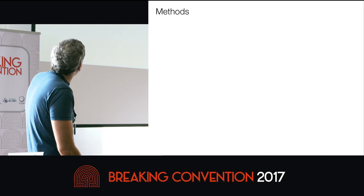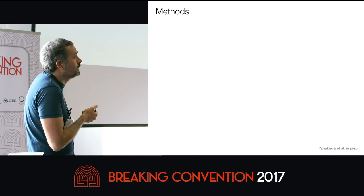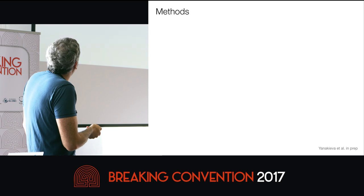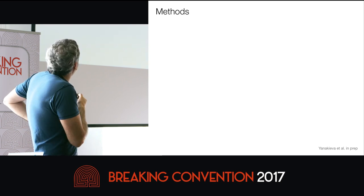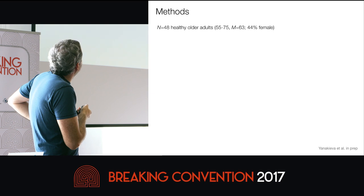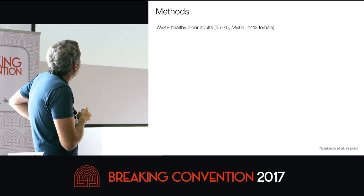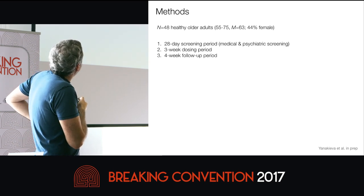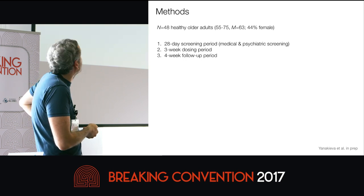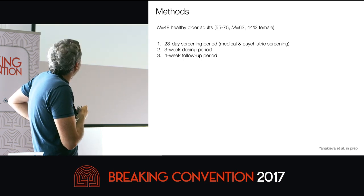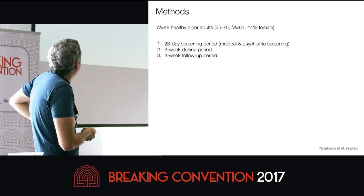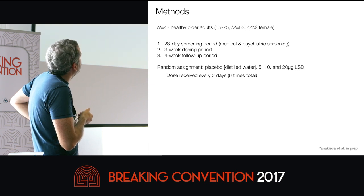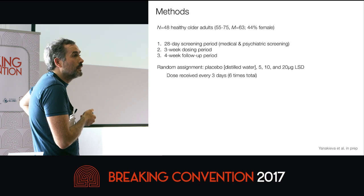There is very robust evidence that dopamine agonists produce temporal overestimation. This study was run by Eleusis Pharmaceuticals, who allowed us to piggyback on it and study time perception. There were 48 healthy older adults ranging from 55 to 75 years of age, approximately half female. The design included a 28-day screening period, a three-week dosing period, and a four-week follow-up. Participants were randomly assigned to placebo or 5, 10, or 20 microgram doses of LSD.